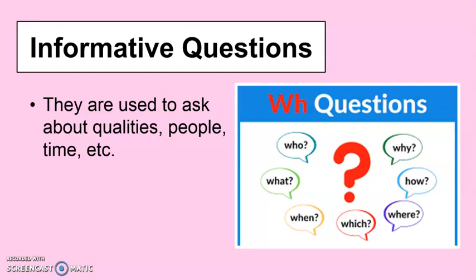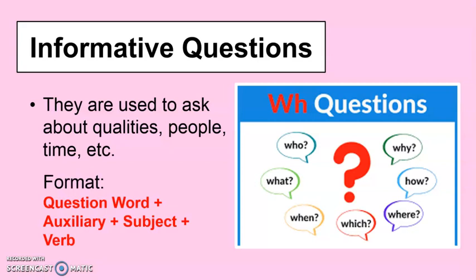Most WH questions begin with a question word like 'who,' followed by an auxiliary verb such as 'is,' and then the subject — for example, 'your brother' — plus another verb and so on. Informative questions are used to ask about qualities, people, time, places, and so on.